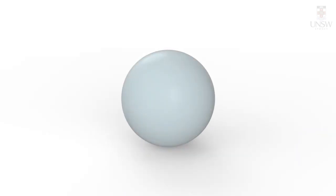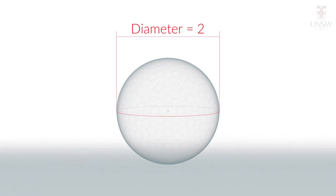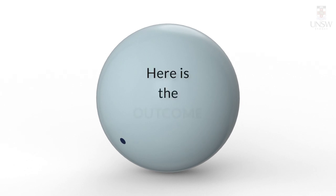Let's start off with our experiments and learning about sample spaces. Say we have a ball with a diameter of 2 and we draw a dot on it. We roll the ball on the ground. When the ball stops, we observe the outcome, which is the 3D location of the dot relative to the ball itself.